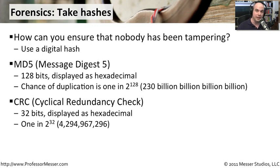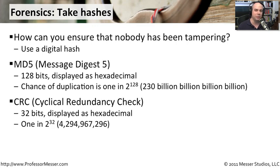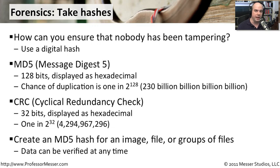An MD5, because it is 128 bits long, takes a little bit longer — there are a few more calculations required to create that fingerprint. Most of the time when we're trying to verify that a file or an image is exactly the same as when we left it, MD5 is the one that gives us that flexibility. You'll often see CRCs when looking at how hard drives are writing and checking their information, but rarely do we use a CRC from a security forensic standpoint.